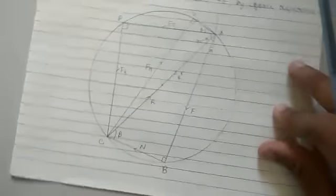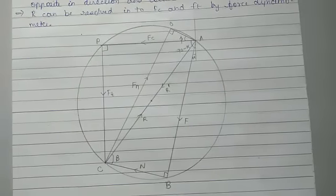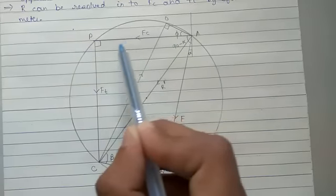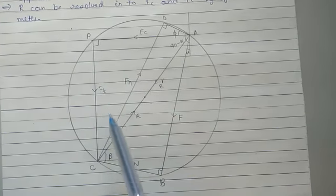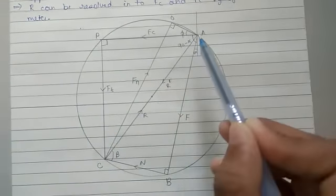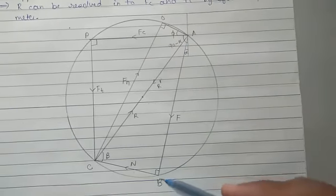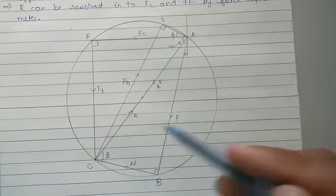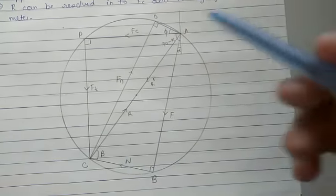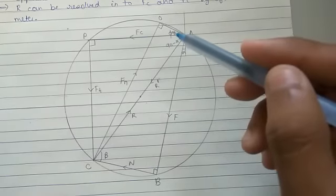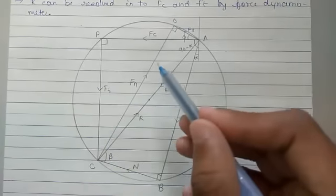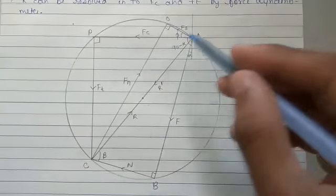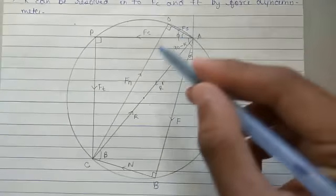This is the diagram which can be resolved easily from the complicated diagram. Fc is the cutting force, perpendicular to it is tangential force, and this is the resultant force. F is the frictional force and N is normal force. R dash is the resultant of F and N. This is the shear force, and FN is the normal compressive force.